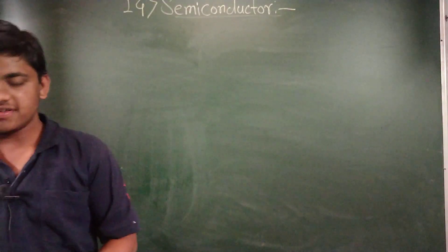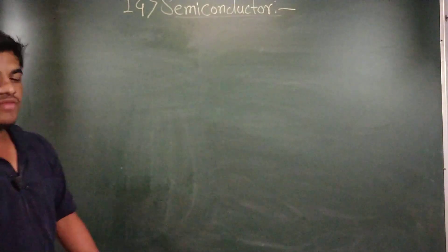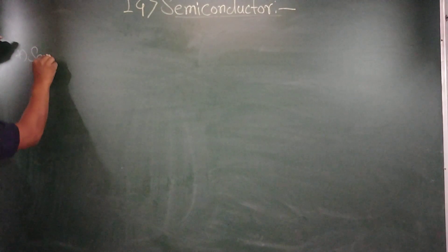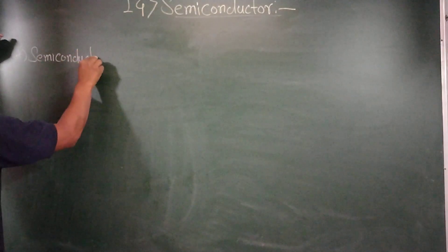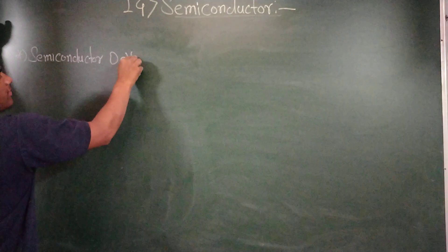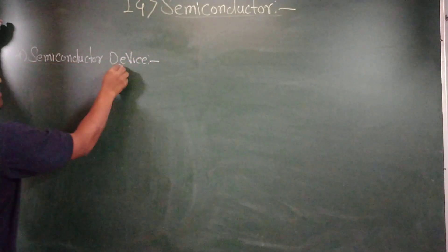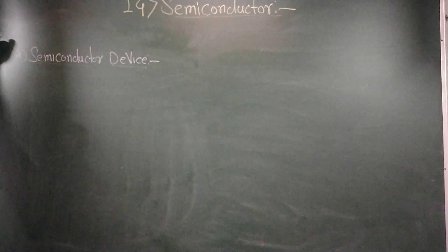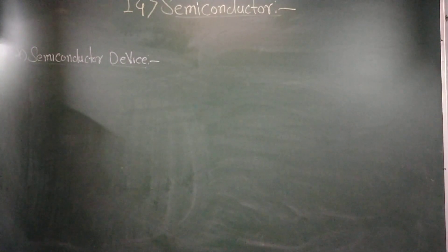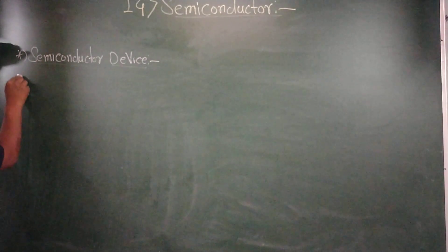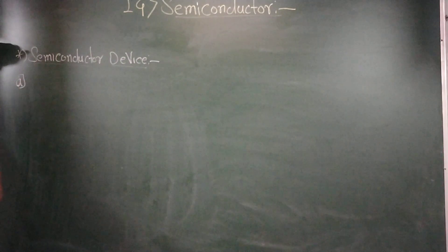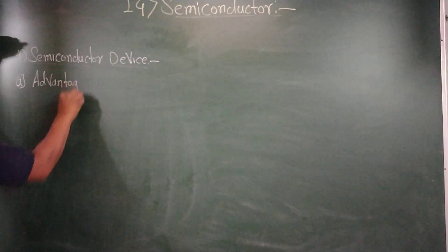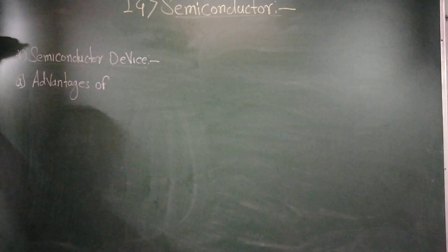Hello, welcome students. In this lecture we will discuss the advantages and disadvantages of semiconductor devices. Please take the heading: Semiconductor Device. The semiconductor device means the PN junction diode, and there are a lot of devices. We will discuss the semiconductor devices and their advantages and also discuss their disadvantages. The first heading will be: Advantages of Semiconductor Devices.